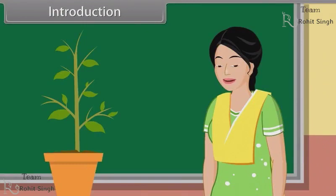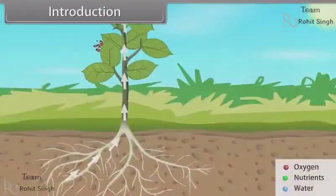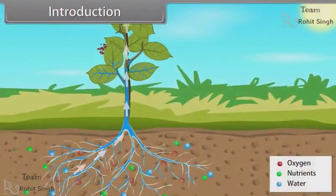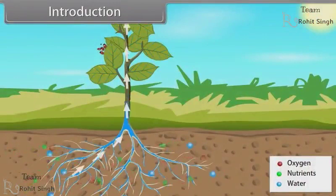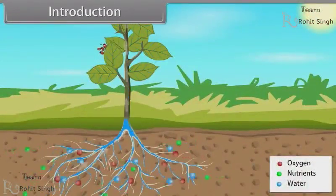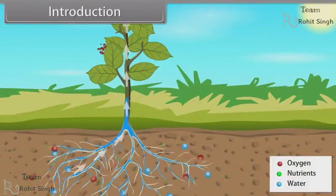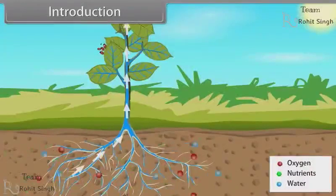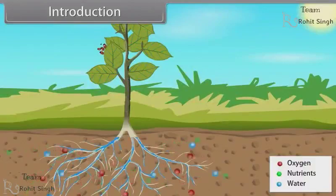Yes, we can. The growth of a plant can be measured by considering various factors such as nutrients availability, water availability, oxygen, etc. There are 5 plant growth regulators: auxins, gibberellins, cytokinins, ethylene and abscisic acid.